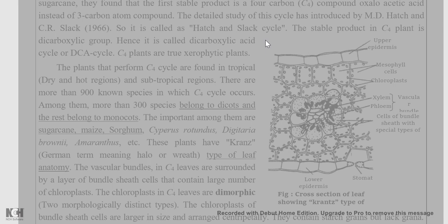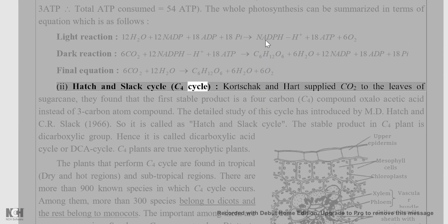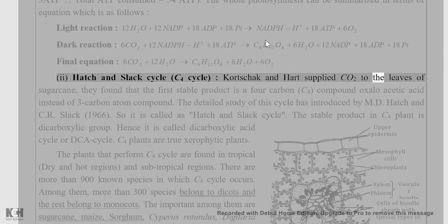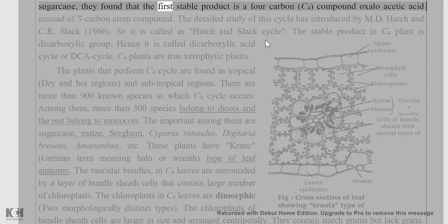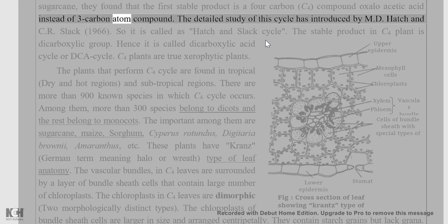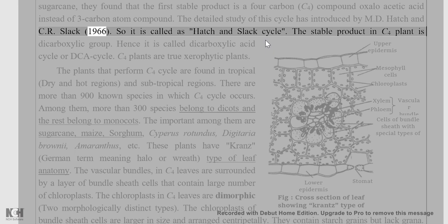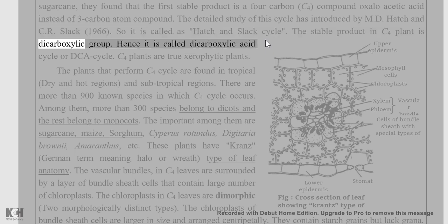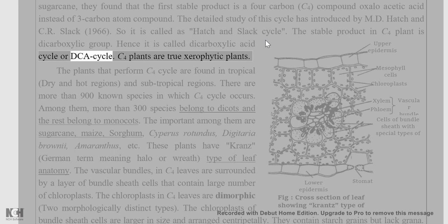Hatch and Slack cycle (C4 cycle): Kortschak, Hartt, and Burr supplied CO2 to the leaves of sugarcane and found that the first stable product is a 4-carbon compound, oxaloacetic acid (OAA), instead of the 3-carbon compound. The detailed study of this cycle was introduced by M.D. Hatch and C.R. Slack. The stable product in C4 plants belongs to the dicarboxylic acid group; hence it is also called the dicarboxylic acid (DCA) cycle.